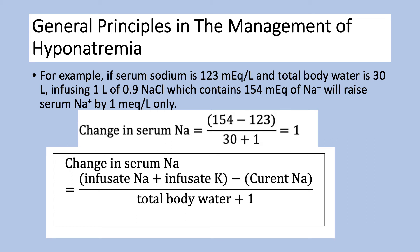For example, if someone has a serum sodium of 123 and total body water of 30 liters, and we infuse one liter of isotonic saline (0.9% saline, which has 154 mEq/L), sodium will rise by only 1 mEq/L: (154 − 123) / (30 + 1) = 1. So that's not very effective — sometimes you try saline for severe hyponatremia and it doesn't work, and this is why. Keep in mind this equation doesn't account for insensible water loss or urine output; sometimes giving saline shuts off ADH and causes water diuresis, so we need to check sodium every 4 to 6 hours.